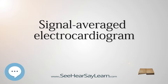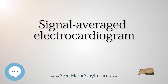SAECG recording yields a single averaged QRS potential, usually printed in a much larger scale than standard ECGs, upon which the SAECG software performs calculations to reveal small variations, typically 1 to 25 microvolts, in the final portion of the QRS complex — the so-called late potentials, or more accurately, late ventricular potentials. These can be immediately interpreted by comparing results with cut-off values.